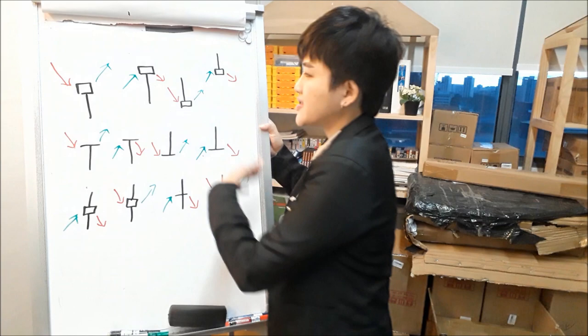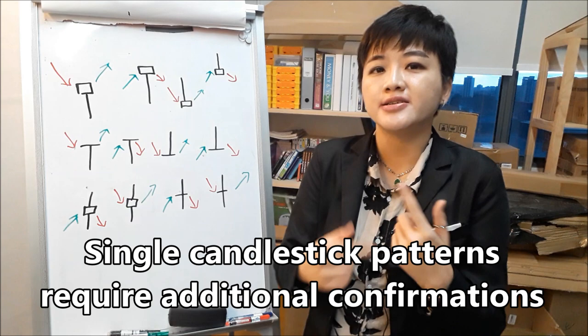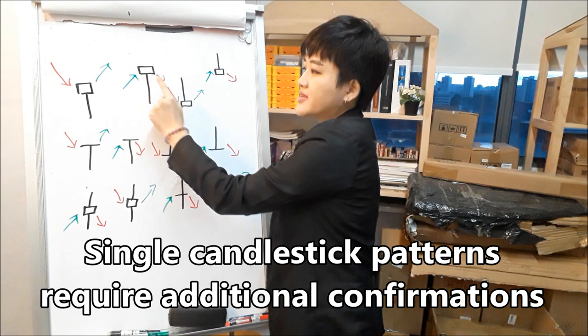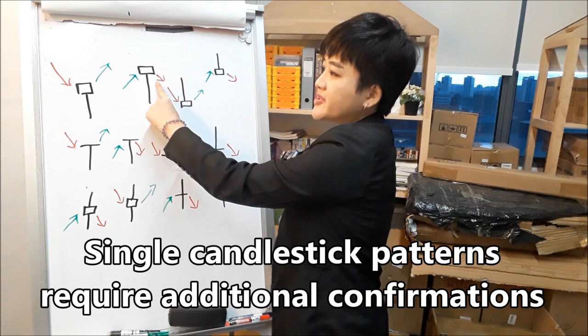All of these candlestick patterns have one thing in common — they are single candlestick patterns. Hence, you will need an additional confirmation. So in order for this U-turn to be strong enough, you want to see a bullish candlestick after this pattern. For this pattern, because we are looking for a U-turn downwards, you want a bearish candlestick signal to appear after this.